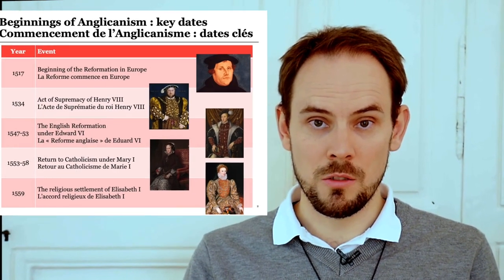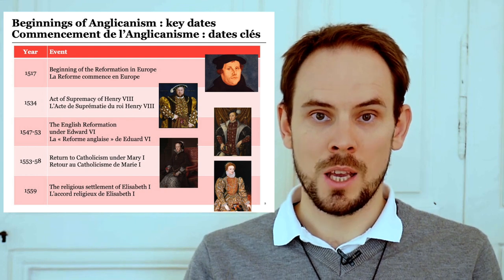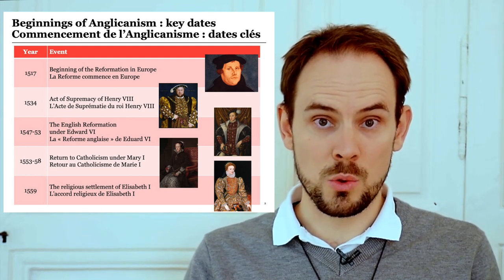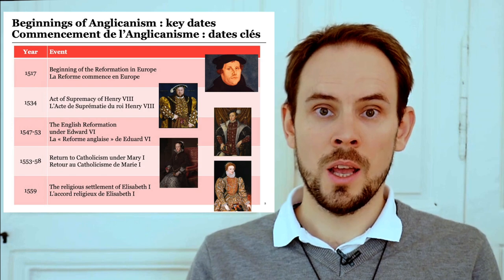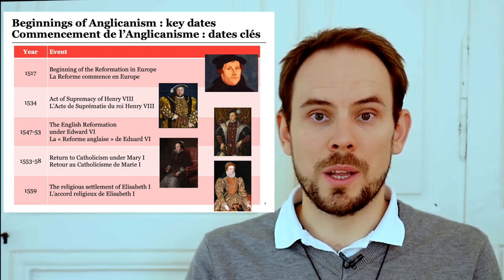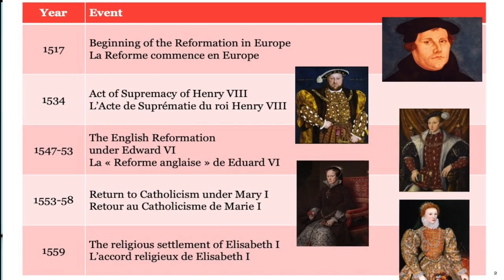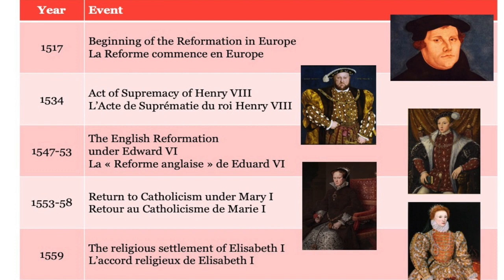This was all happening just a few years after the Reformation had begun in Europe in 1517, and ideas from the Reformation started to arrive in England. This meant that the new independent English Church became more Protestant. It then, for a few years around the middle of the 16th century, returned to Catholicism and was again in communion with Rome, before finally separating from Rome for a second time, and coming to an arrangement which incorporated elements of both Catholicism and Protestantism.